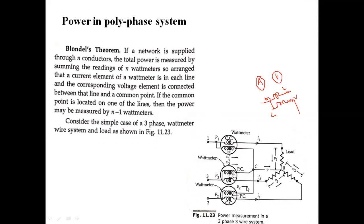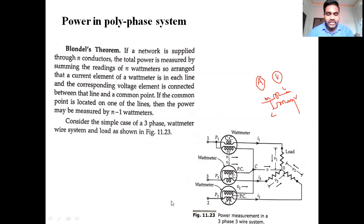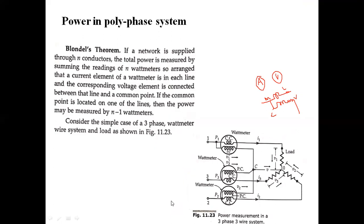The network is supplied with N conductors. Conductor one carries current I1, conductor two carries current I2, and conductor three carries current I3. Blondel's theorem states: in a network supplied through N conductors, the total power is measured by summing N wattmeter readings arranged through the current element in each line, with the voltage element connected to a common point. If the common point is on one of the lines, it is measured with N minus 1 wattmeters.